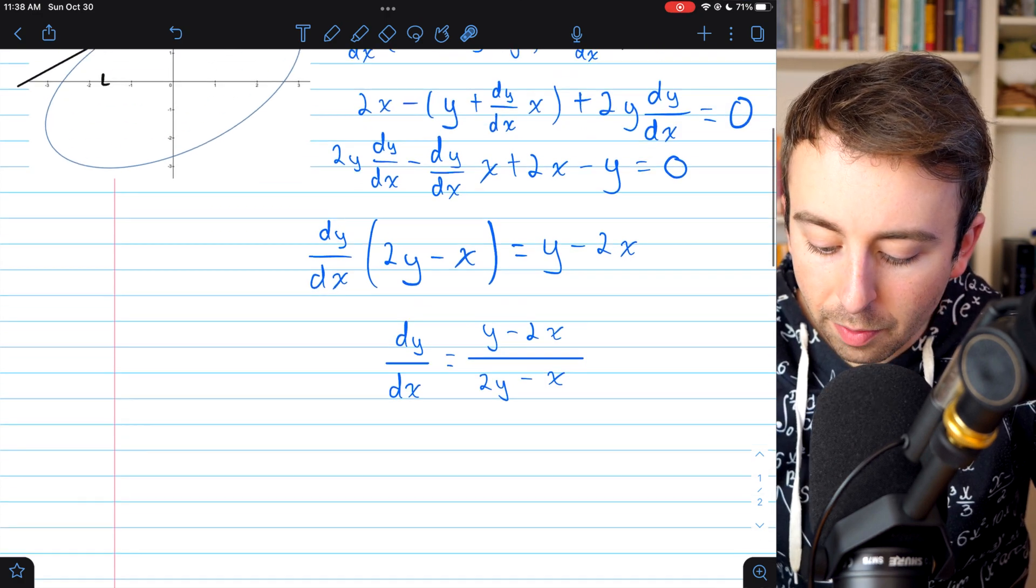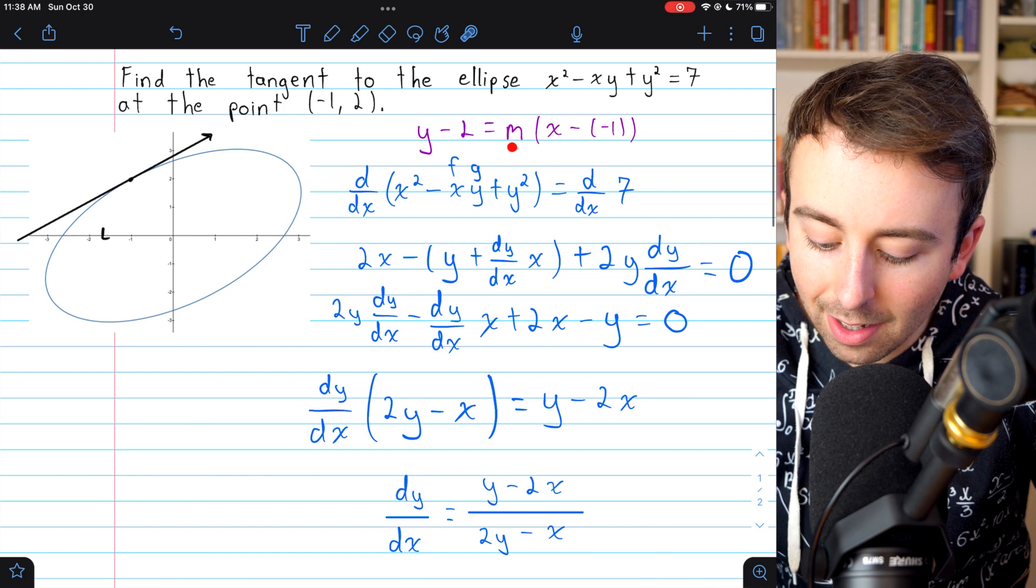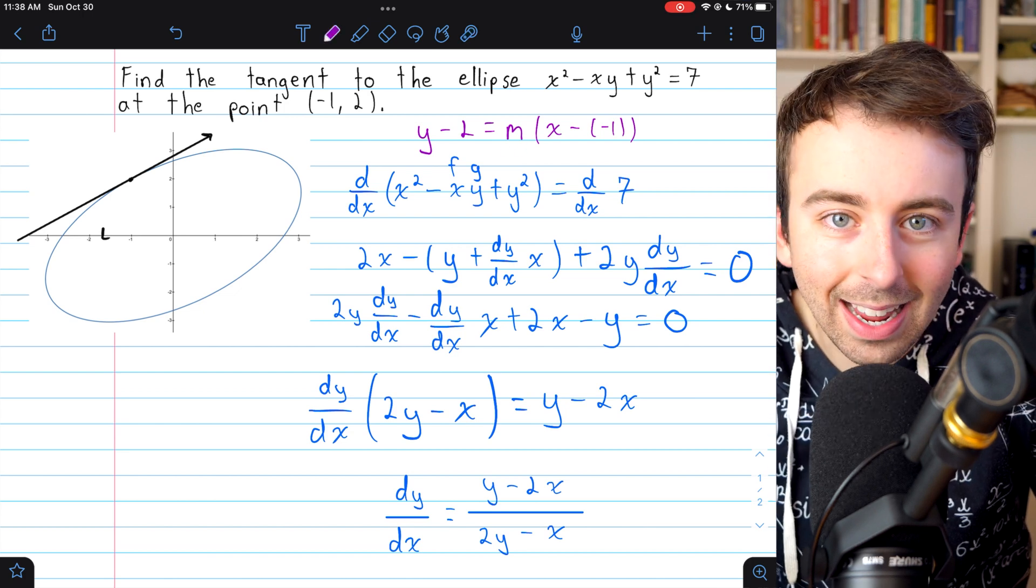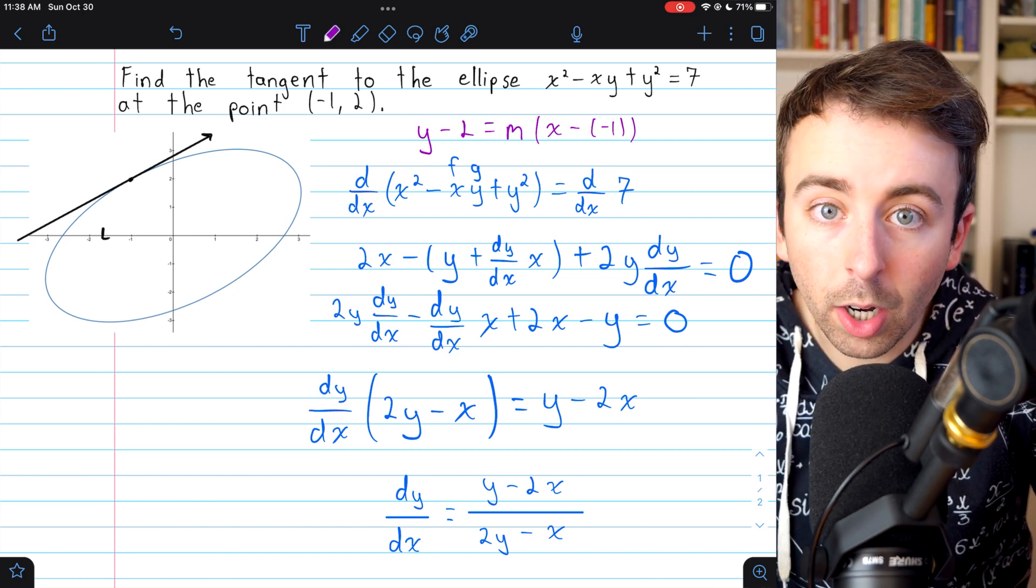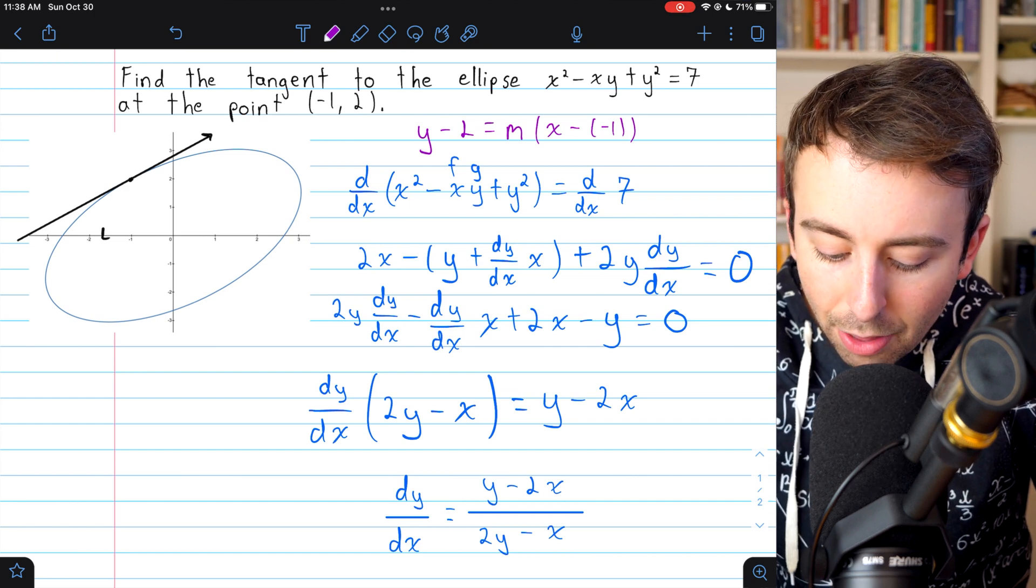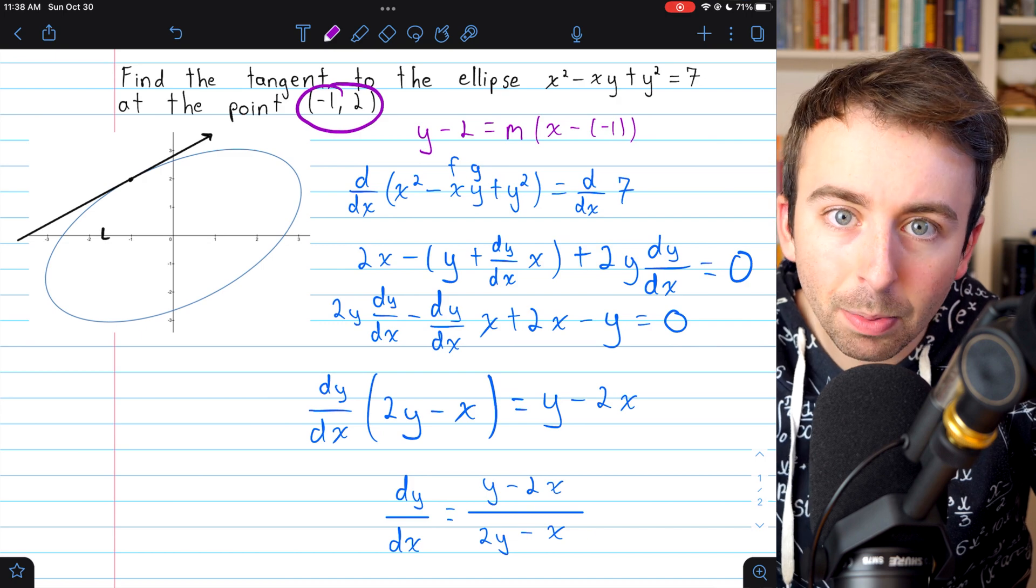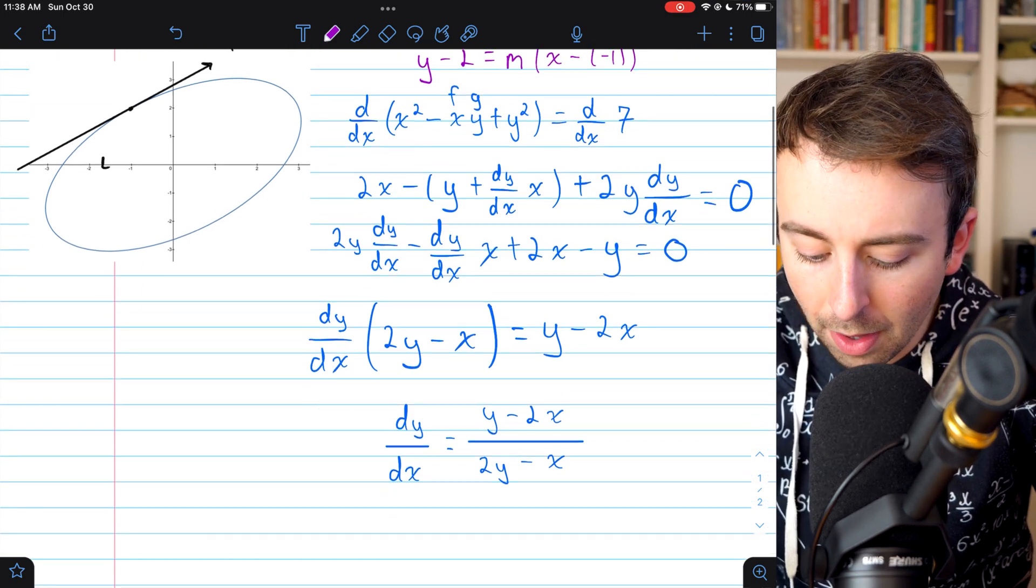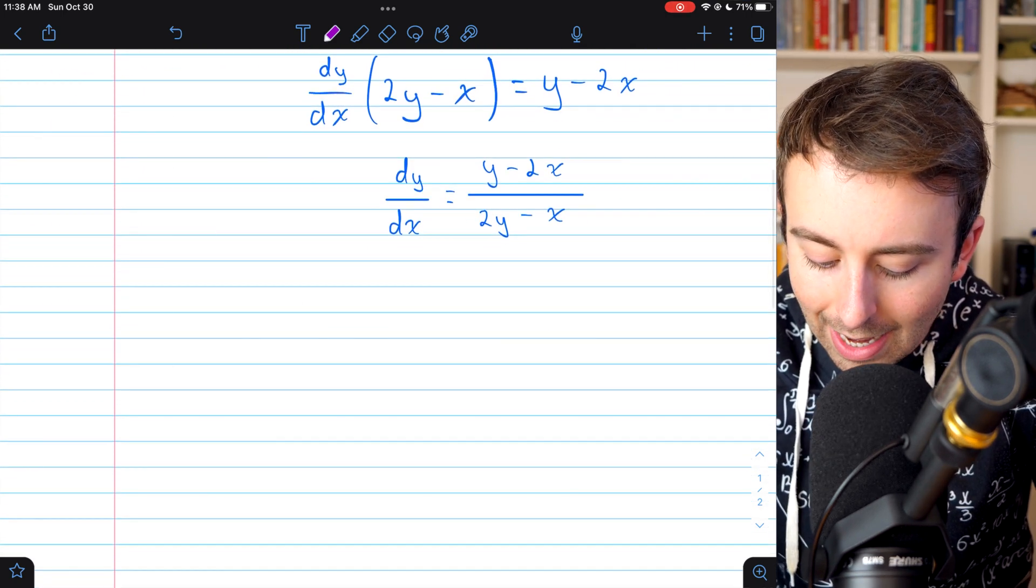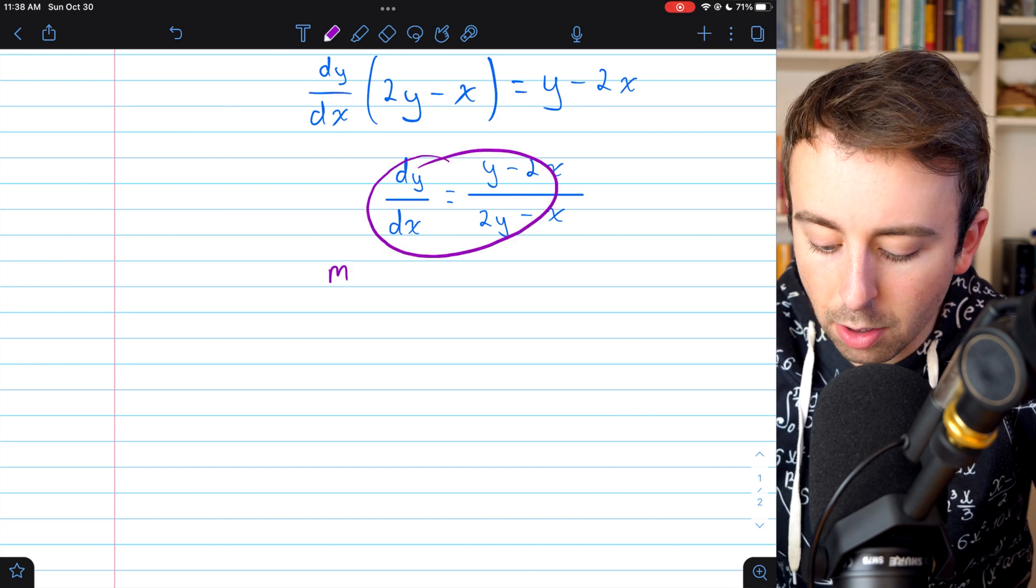Now we can use this derivative to finally find that slope m of our tangent line. Remember, we're looking for the line to be tangent at the point (-1, 2). So we need its slope to match the slope of the ellipse at (-1, 2). So we'll just go ahead and plug (-1, 2) into the derivative.